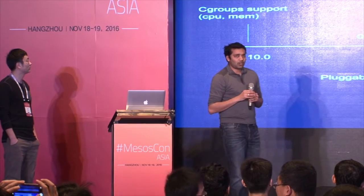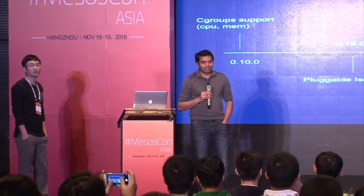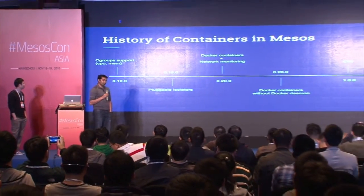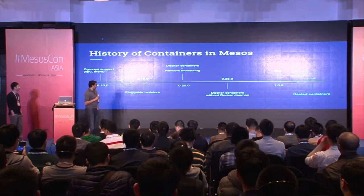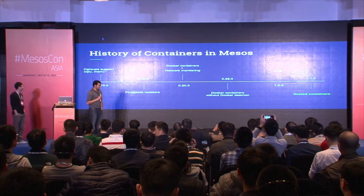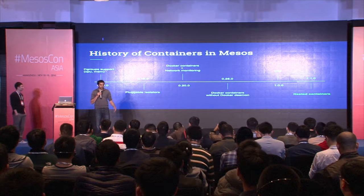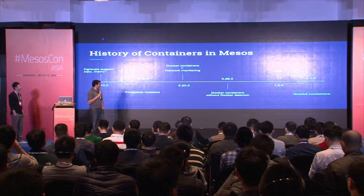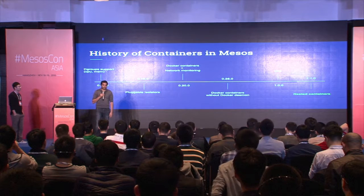I wanted to start this talk off with the history of how we did containers in Mesos up to this point. As you probably know, Mesos has been around for a while, and we've had some form of support for containers for a very long time. As far back as version 0.10, we had rudimentary cgroup support for CPU and memory, and we were able to isolate tasks and executors. Then we added pluggable isolation, which was a pretty big deal — the Mesos architecture lets you add your own organization-specific isolation techniques.